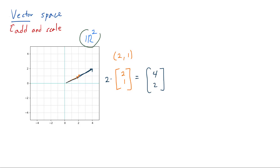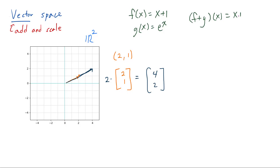I should hasten to add that although R2 is a really nice example of a vector space where vectors geometrically can be visualized as these arrows, there are certainly many other vector spaces out there. For example, if you consider the set of all functions from R to R, like f(x) = x + 1 and g(x) = e^x, then these functions can be added and scaled in a very natural way. For example, (f + g)(x) can simply be x + 1 + e^x. So the set of functions from R to R is a vector space, and the set of real polynomials is a vector space, the set of differentiable functions can be a vector space, and so on.